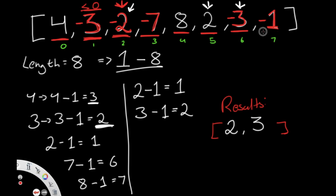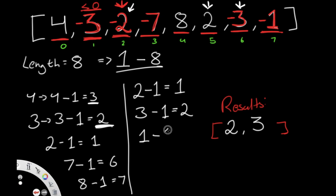For the last number, which is negative 1, we take its absolute value of 1, then 1 minus 1 equals 0. We go to index 0 and multiply that number by negative 1, getting negative 4. But since that's the last number it doesn't matter. This is the complete method for determining whether a number is repeated.